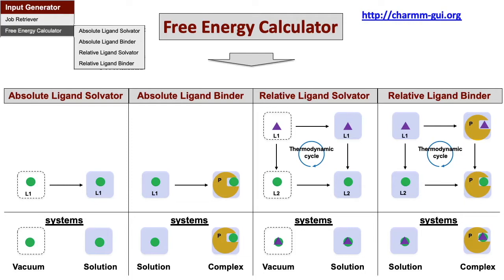Absolute Ligand Solvator and Absolute Ligand Binder help users calculate ligands' absolute free energy of solvation and binding, whereas Relative Ligand Solvator and Relative Ligand Binder help users calculate the relative free energies of solvation and binding for a set of ligands compared to each other.